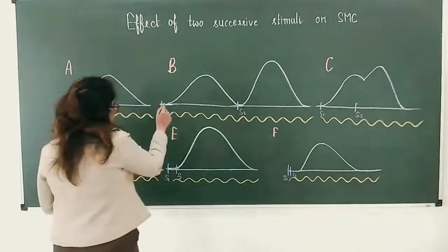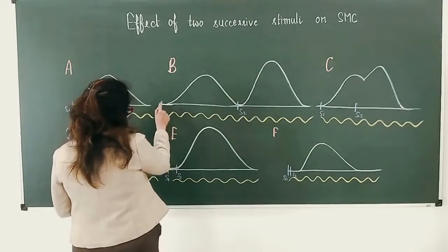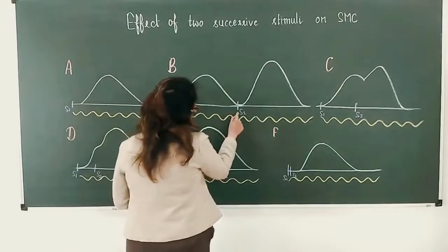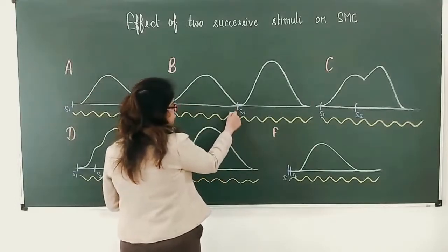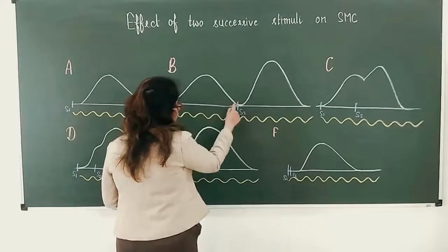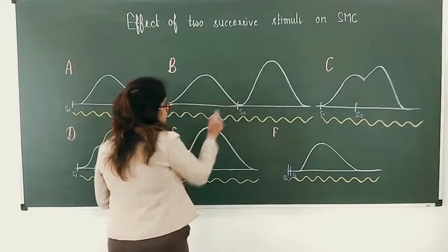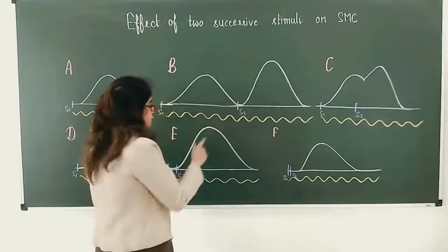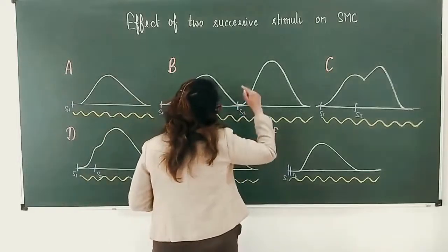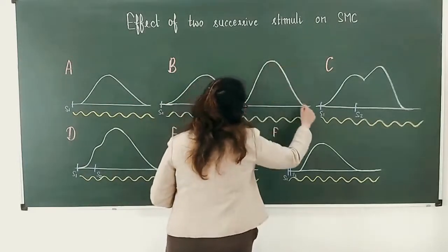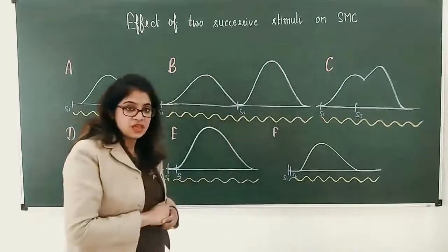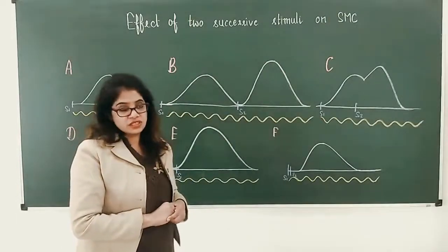In the second curve, this is the first stimulus and this is the second stimulus. The second stimulus falls after the relaxation phase of the first curve is complete. So after relaxation is complete, the second stimulus is being given, and we can see the height of the curve increases, although the strength of the stimulus was the same.